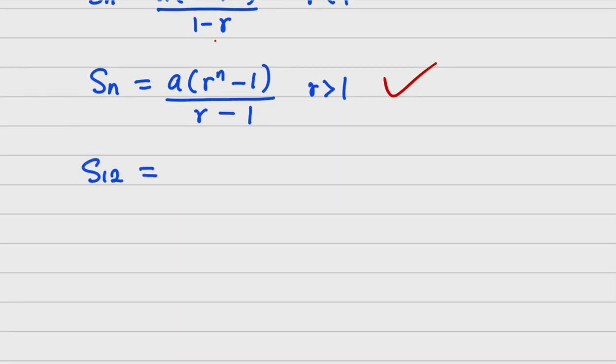Now so we will now put in our values so that we are going to have S12 now. That is sum of the first 12 terms is going to be 1 because our A is 1. Then we have R which is X raised to the power N and the N of course is 12. So let me replace it. Minus 1. Then everything here all over what? X minus 1.